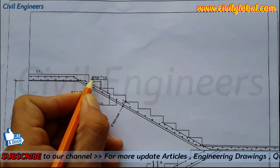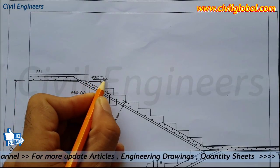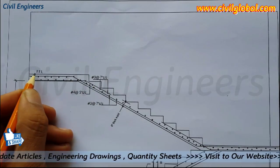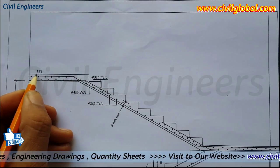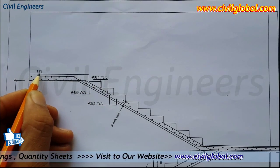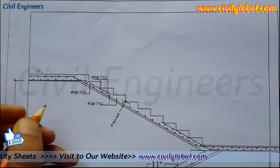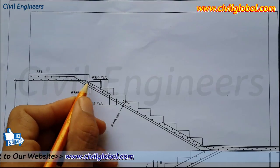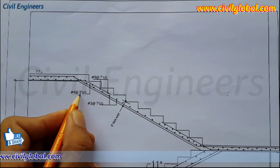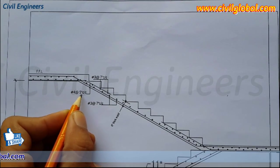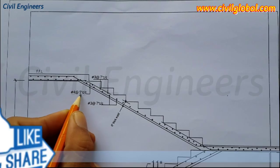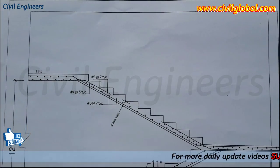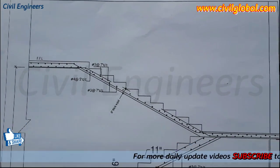In the second flight we also use bent-up bars: #3 diameter at 7 inches center-to-center. At the finish floor level, the bent-up bar uses 4 numbers of steel at 5 inch center-to-center spacing.